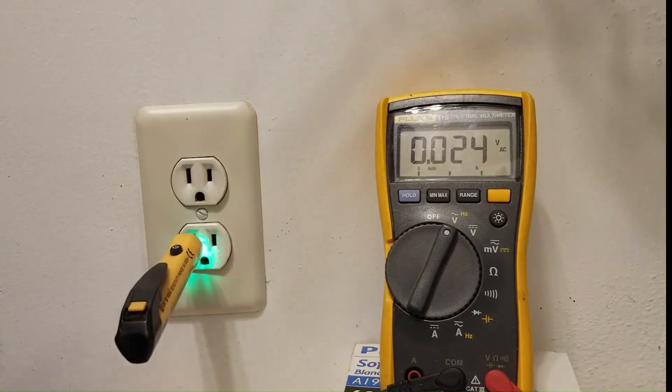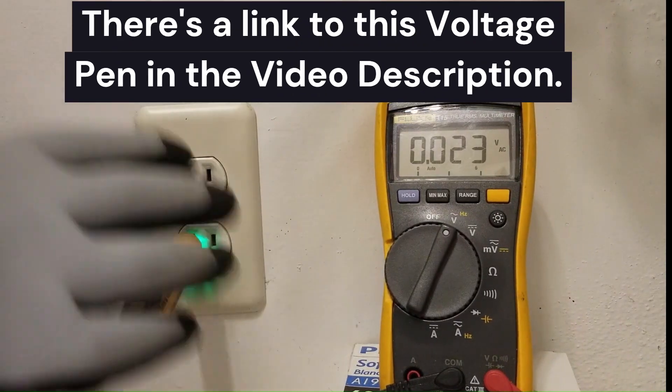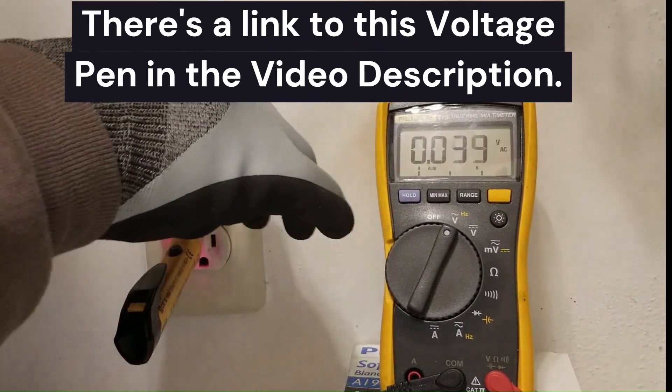So the voltage pen is indicating that neutral is getting pulled up to 120 volts when we plug this in.